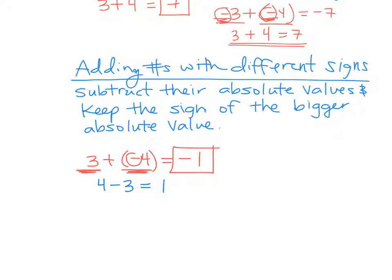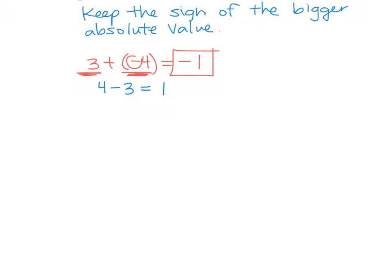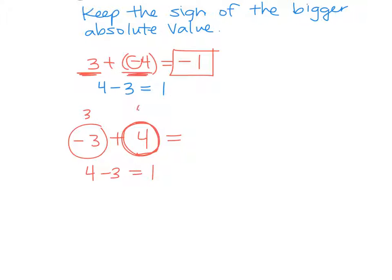Let me show you again. If I said negative 3 plus 4 — one is positive, one is negative. So we subtract them. If they have different signs, we subtract. So 4 minus 3 is 1. Is that going to be a positive 1 or a negative 1? Positive. Because our bigger absolute value — this is 3 as an absolute value, this is 4 as an absolute value — this one's bigger. Our bigger absolute value was positive. So my answer is positive.